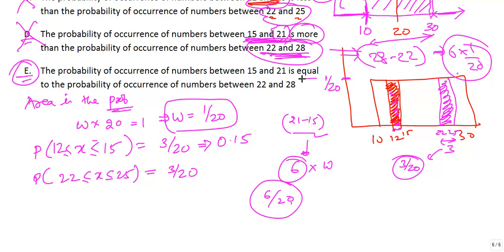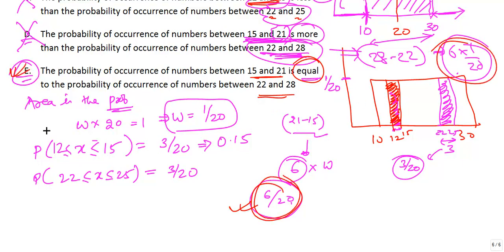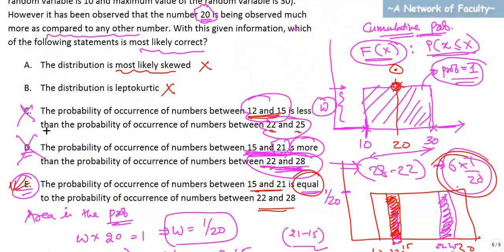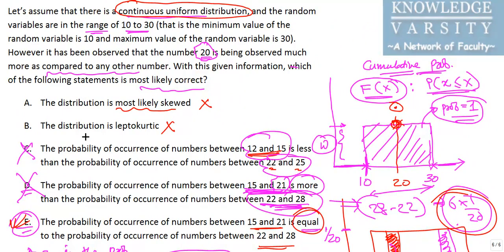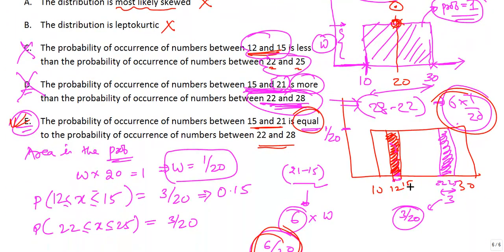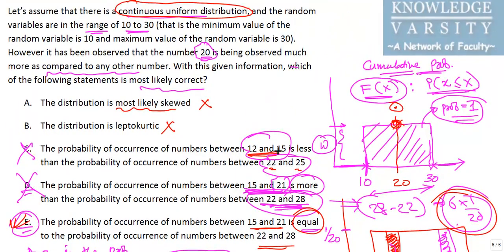The probability of occurrence between 15 and 21 and between 22 and 28 are equal — that is what we have observed. So option E is correct. This is how you should approach this kind of problem. Many of you will be able to get this directly — for the area between any two numbers, just take the distance and divide by 20. I hope this video has given you an idea of how to solve this type of problem. This is Ratan Gupta from KnowledgeVarsity.